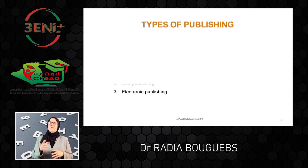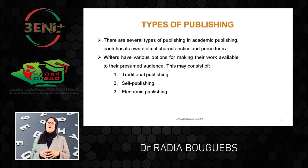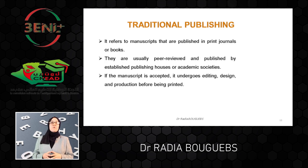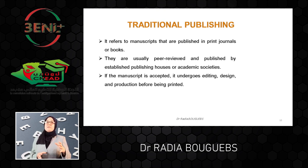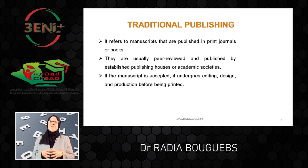Writers have various options for making their works available to the larger or presumed audience, like traditional publishing, self-publishing, and electronic publishing. Traditional publishing follows the traditional process, where works are usually peer reviewed and published by established publishing houses or academic societies. If the manuscript is accepted, it undergoes editing, design, and production before being printed.